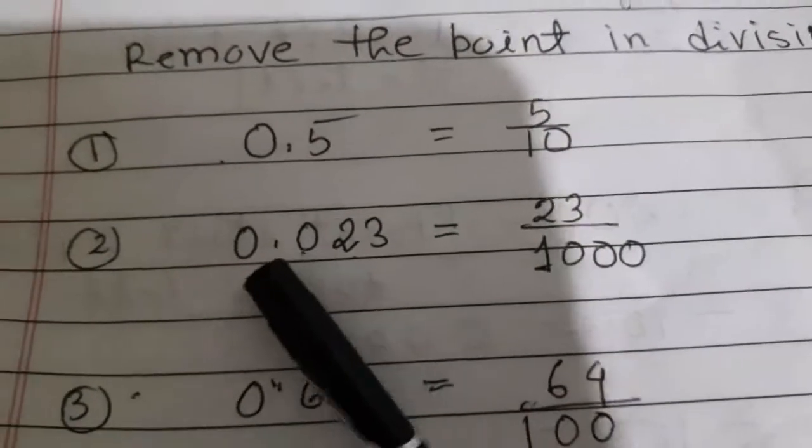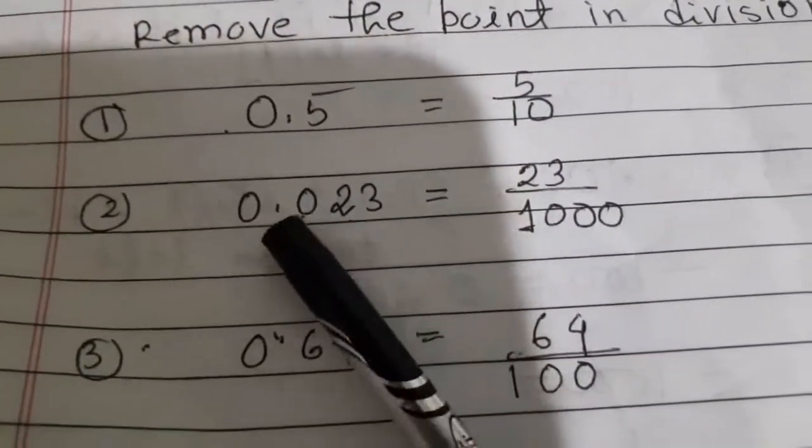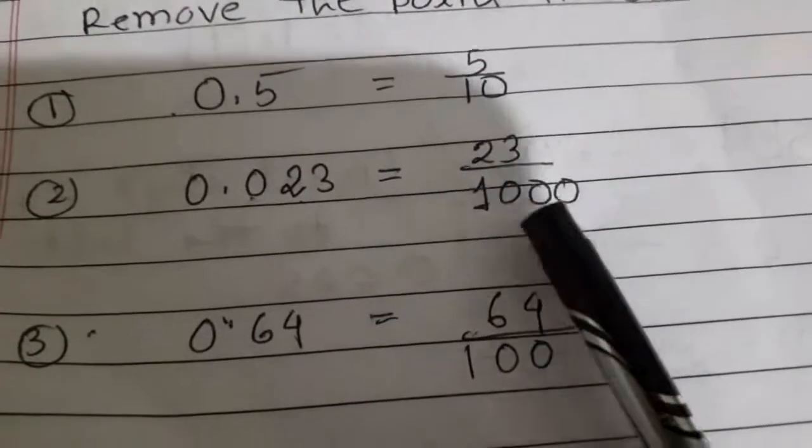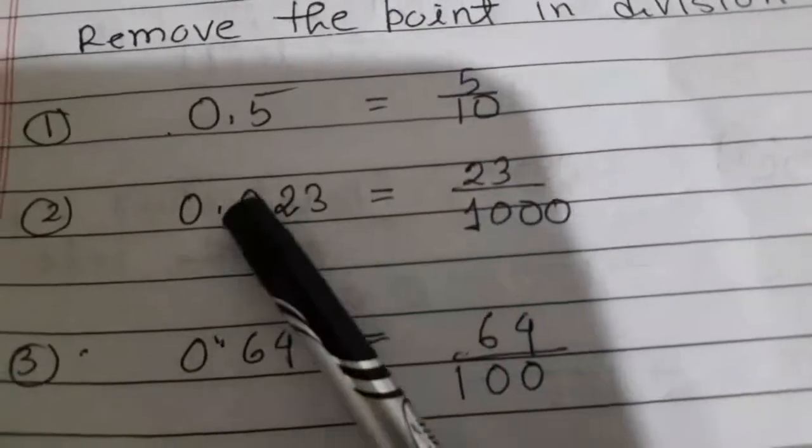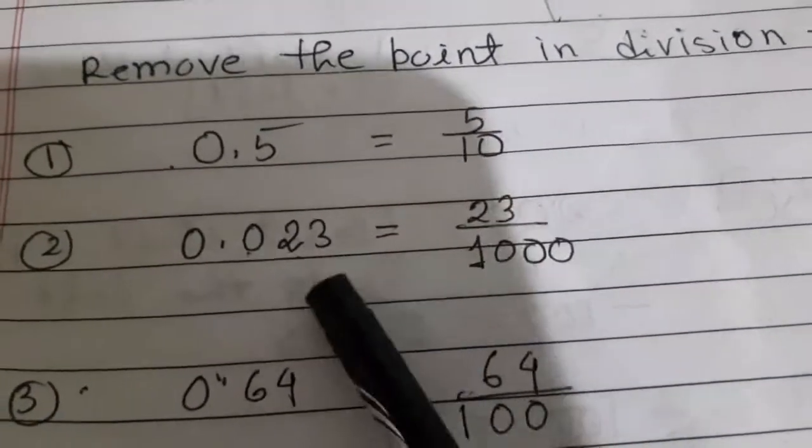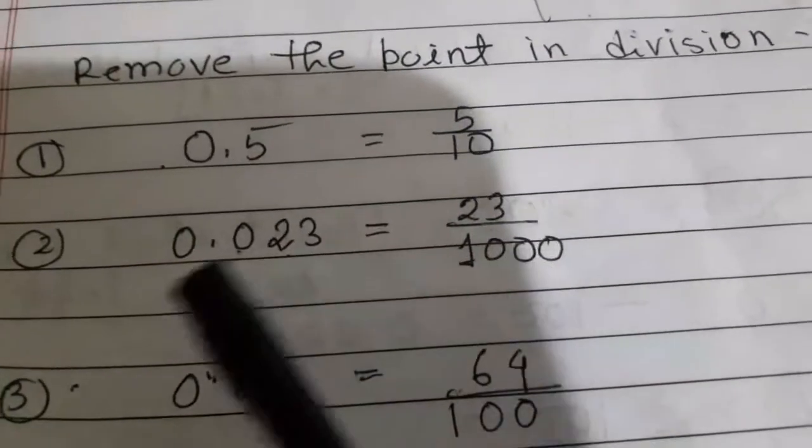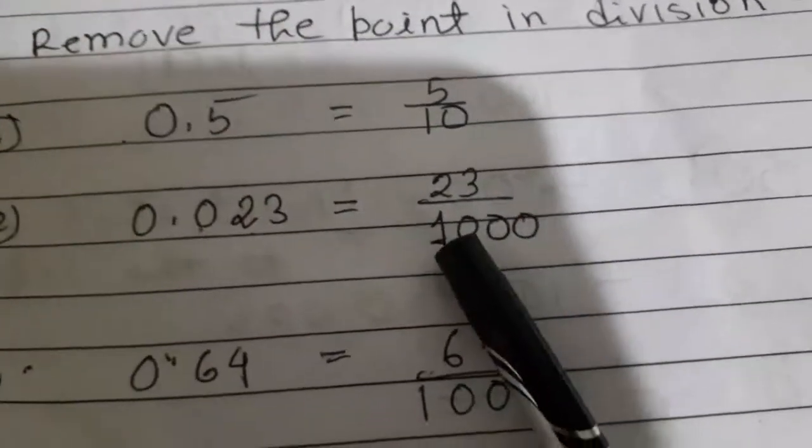Here you see 0.033. How many digits after the point? One, two, three digits. Therefore we put here three zeros.